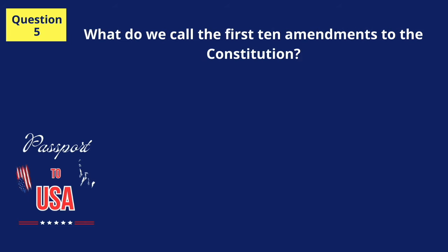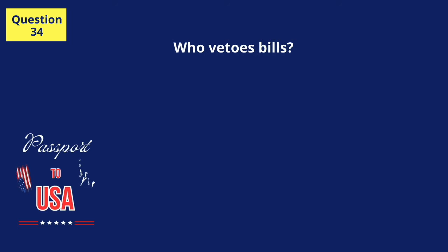What do we call the first ten amendments to the Constitution? The Bill of Rights. Who vetoes bills? The President.